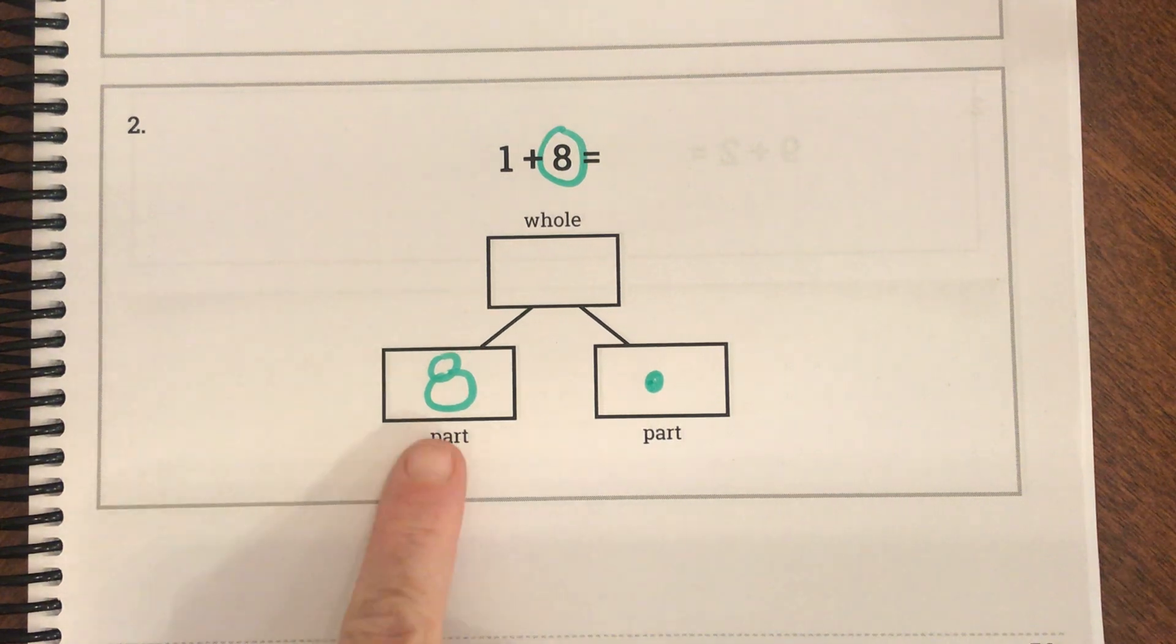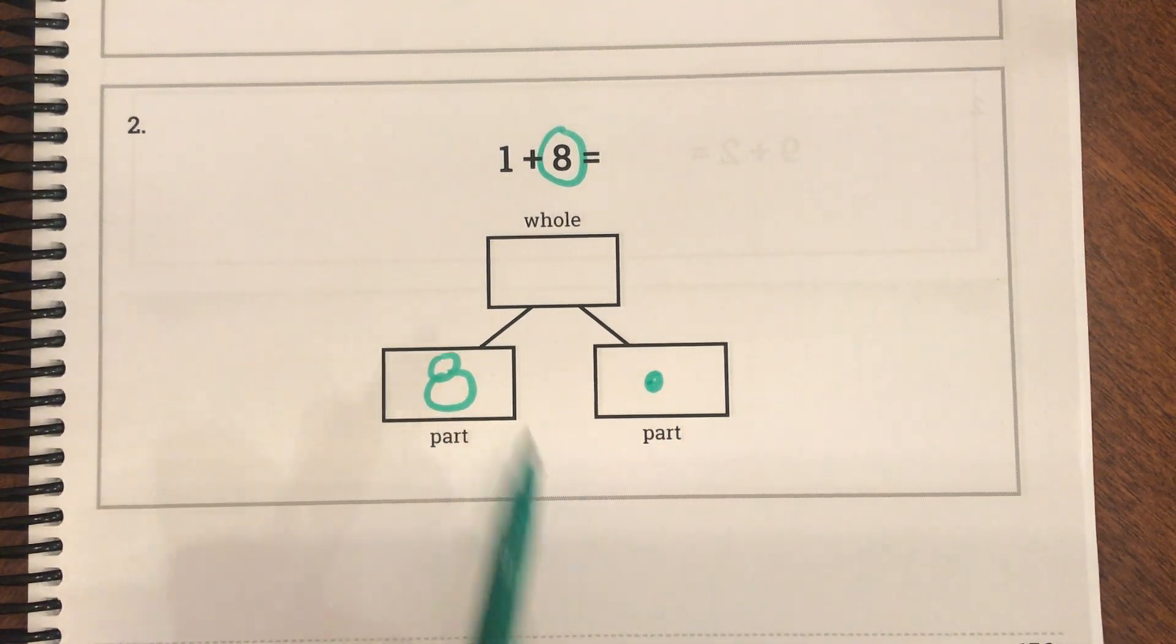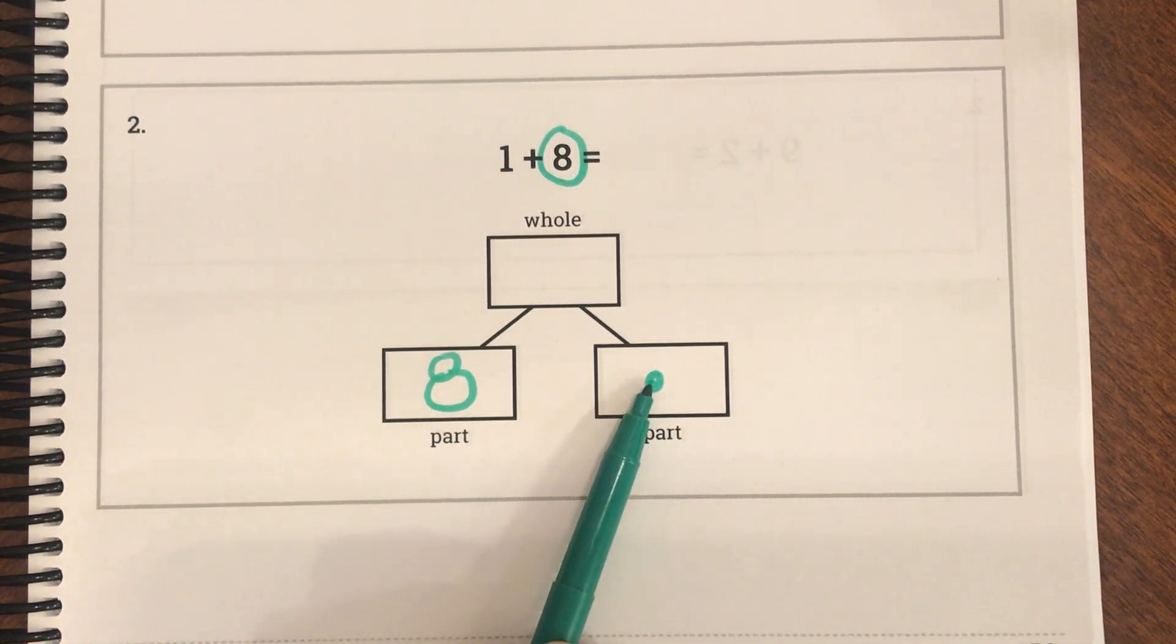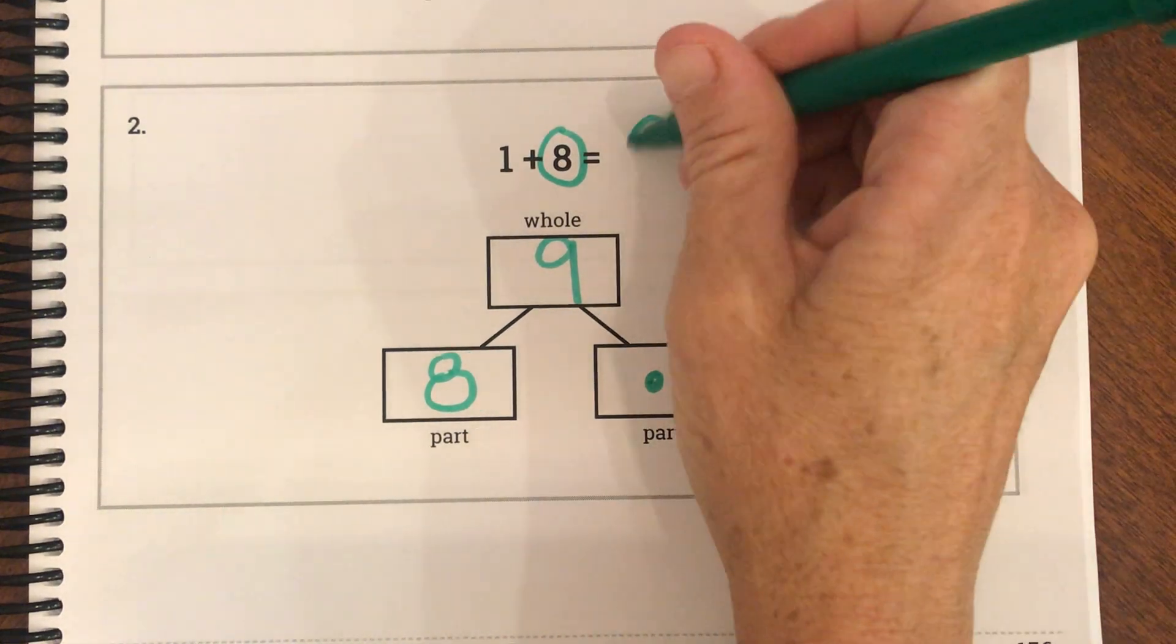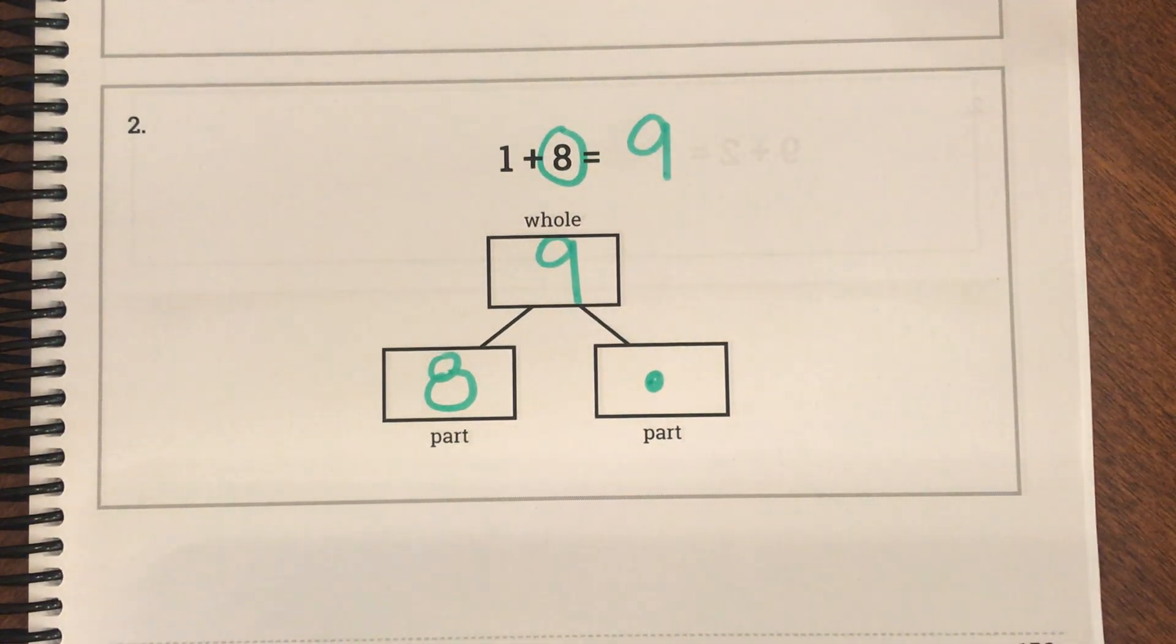So for our count on strategy, we start at 8 and then we keep counting. So 8, 9. That's it. I only had one more to count. So our whole or our sum is 9. Our answer is 9.